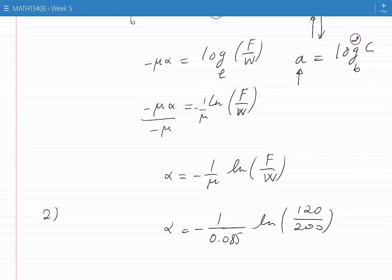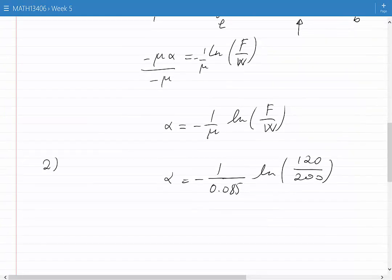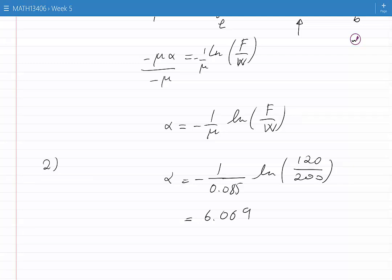And if we simplify this, we would get approximately 6.0971 radians, which is approximately equal to 344 degrees.